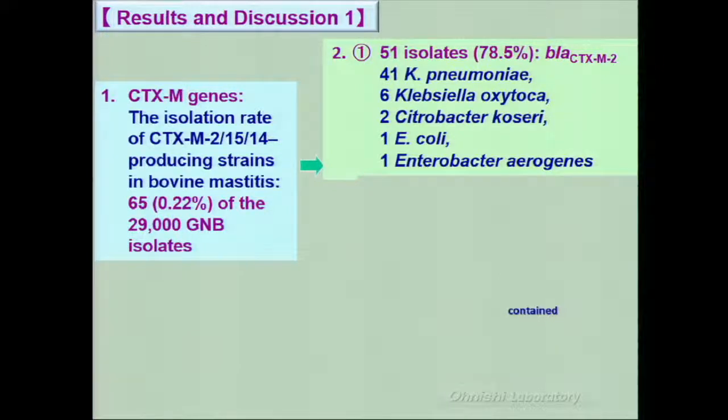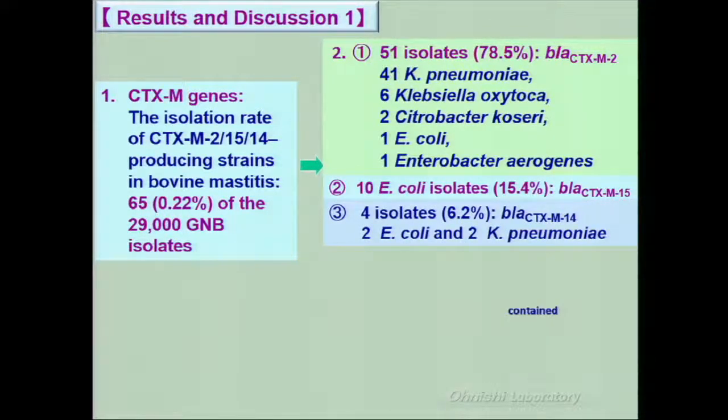There were 41 K. pneumoniae, 6 Klebsiella oxytoca, and other 3 genera of Enterobacteriaceae species. 10 E. coli isolates harbored bla CTX-M-15. 4 isolates harbored bla CTX-M-14.